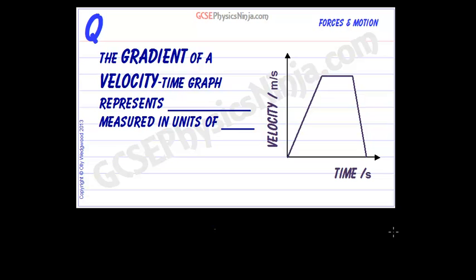But now if we take a look at a velocity or speed-time graph - remember velocity is speed but in a certain direction - then the gradient of a velocity-time graph represents acceleration. It's measured in units of meters per second squared.